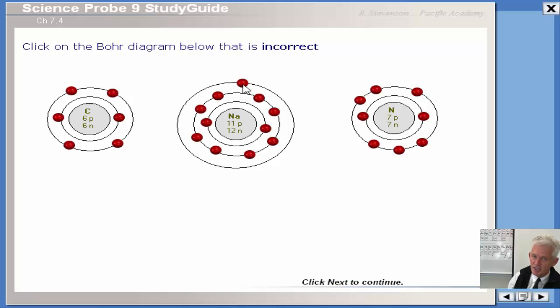The reason sodium is so reactive is because what it really wants is to have a full outer shell. The only way it can have a full outer shell is if it gets rid of this one and becomes an Na1+ ion by losing one negative electron. Anyhow, the question was, click on the Bohr diagram below that is incorrect.